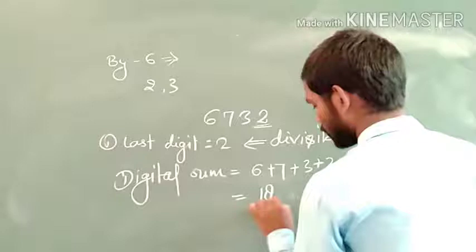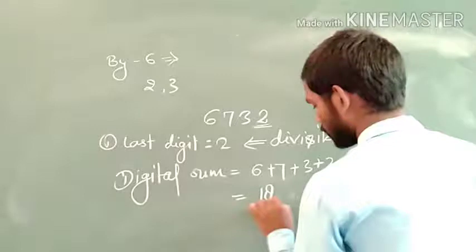Now let us see the divisibility by 9. In the same way as we found the digital sum and checked that if the digital sum is a multiple of 3 then the number is divisible by 3, similarly here we also find out the digital sum. If the digital sum is a multiple of 9, then that number is divisible by 9.